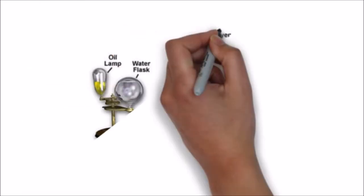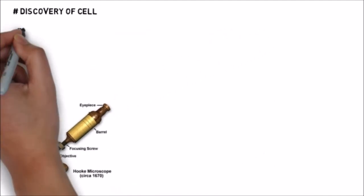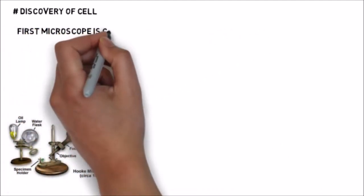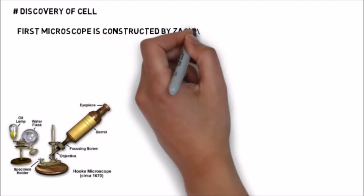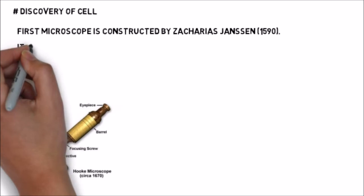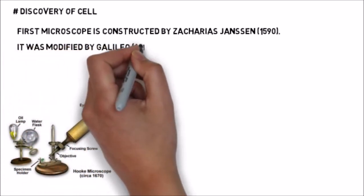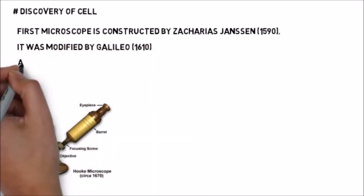What is cell and what is it made of - we will study about it. First of all, cell is a very microscopic structure, so it was not possible to see it with the naked eye. The very first microscope was constructed by Zacharias Janssen in 1590. Then it was modified by Galileo, and then by Robert Hooke.